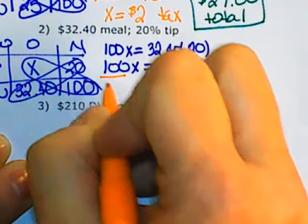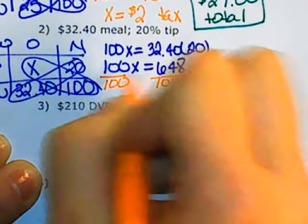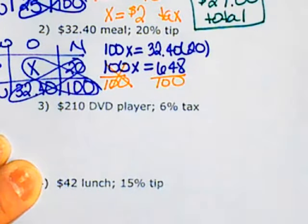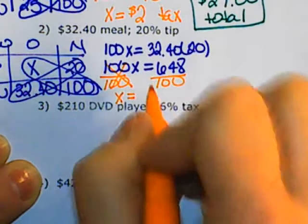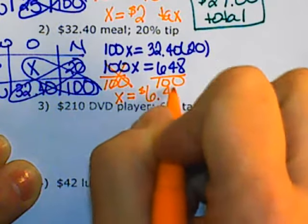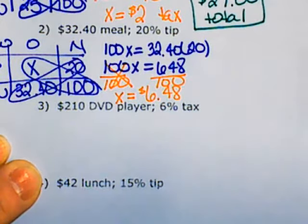Divide both sides of the equation by the coefficient of 100, and x equals a $6.48 tip.